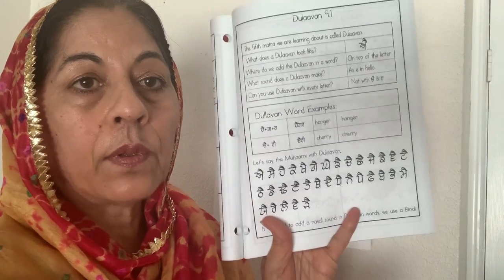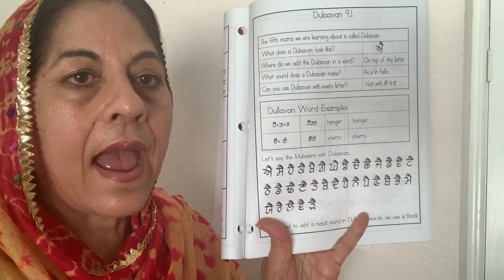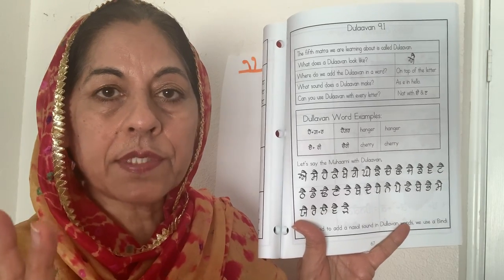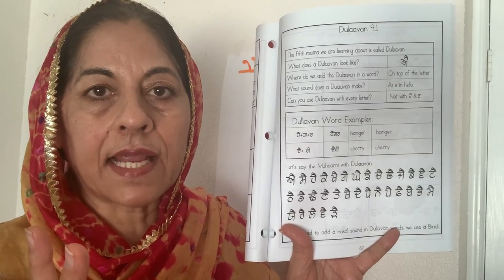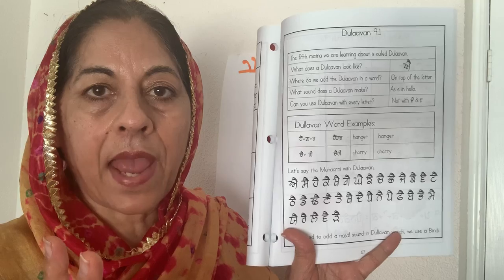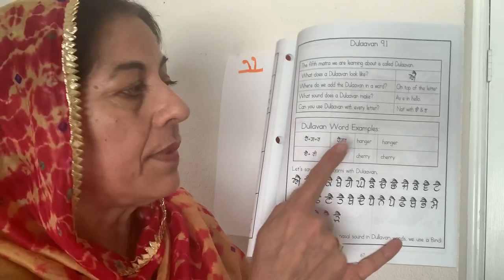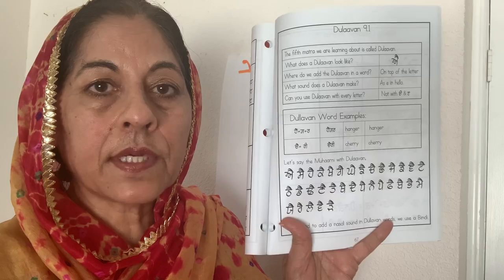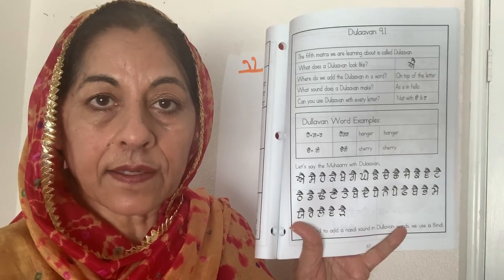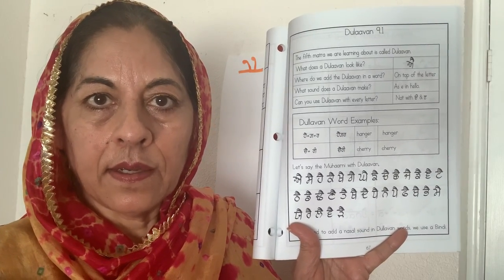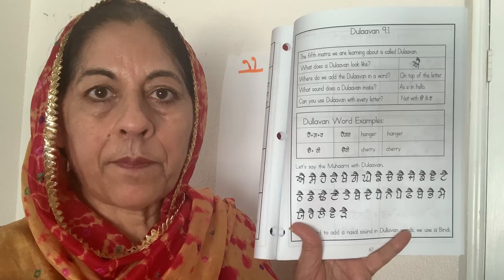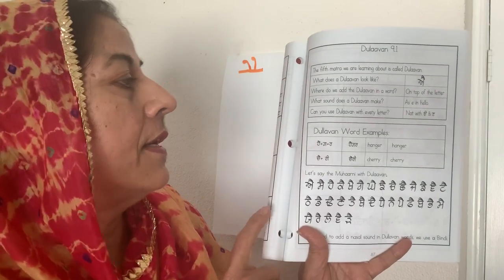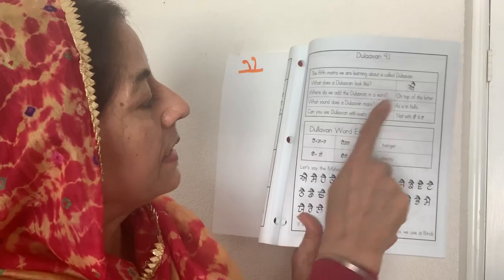The sound of Dulaama is like 'apple' or 'hello' — the Eh or Ah sound. In English we have two sounds: Eh and Ah, like in 'pen' and 'pan.' But in Punjabi, the same matra can make both sounds. We only need to use an adhuk when we say 'pen,' and when we say 'pan,' we don't use the adhuk. So you already know the adhuk.